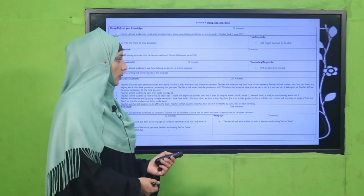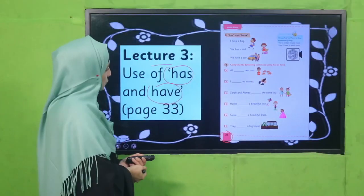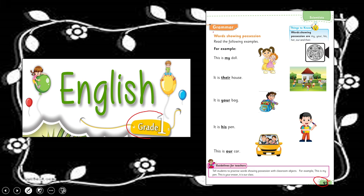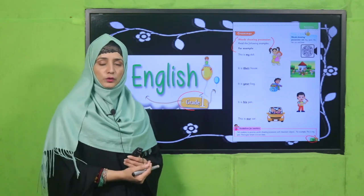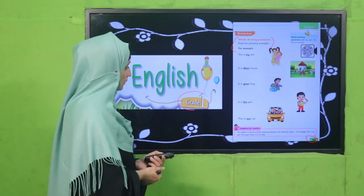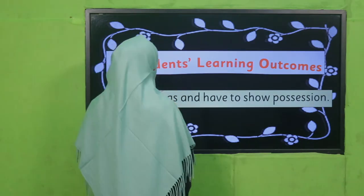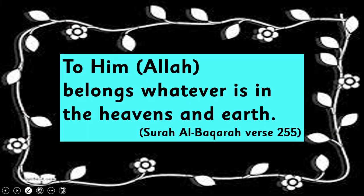I am going to deliver my lecture according to this lesson plan. Our today's lecture is Lecture Number 3. We will learn about the use of 'has' and 'have' on page number 33. Our student learning outcome for today is: use 'has' and 'have' to show possession.